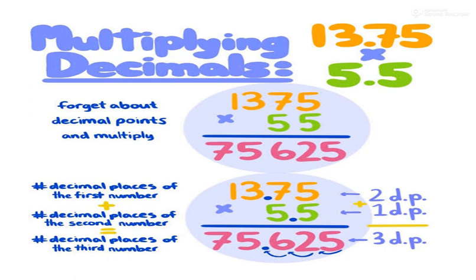It means 13.75. How many decimals? After decimal, how many places? 2. After decimal, how many places in 5.5? 1. Total 3. In the answer, when you will put the point, back side you will put 5, 6, 2, 3 places. Then 75.625.